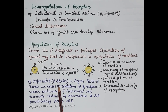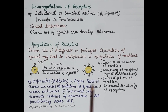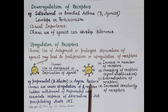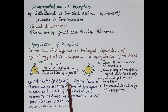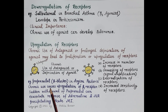Let's understand up regulation with the example of the beta blocker propranolol in angina pectoris. In angina there is reduced oxygen availability to the myocardium. Beta blockers block beta-1 receptors of the myocardium, reducing heart rate and force of contraction, thereby reducing the workload of the heart so it requires less oxygen. Chronic use of propranolol causes up regulation of beta-1 receptors in the myocardium.